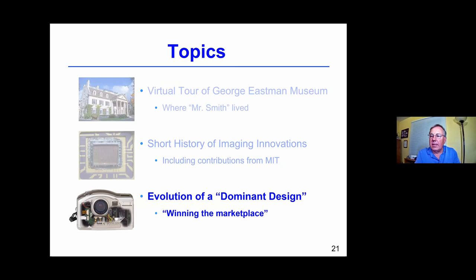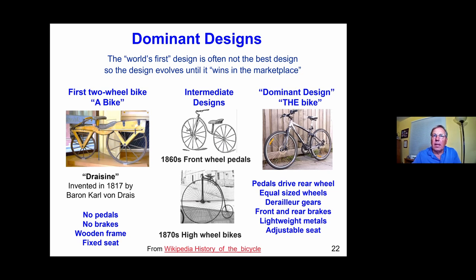Let me go on and talk about what I call the evolution of a dominant design, or winning the marketplace. Many different companies and engineers contributed to what became the dominant design in mass-market digital cameras. What's a dominant design? Basically, the first design of something is often not the best design, and the design evolves until it wins the marketplace. On the left is the first two-wheel bike from 1817 — it had no pedals or brakes, you had to push along with your feet, and it had a wooden frame and fixed seat.